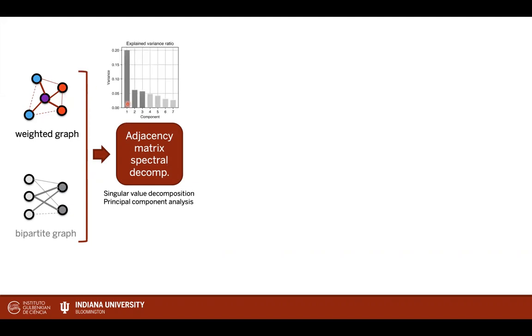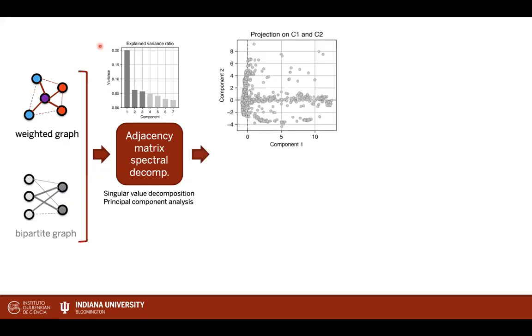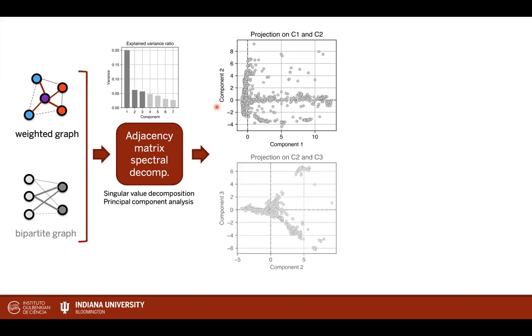This will give us the explained variance for each component, shown in this plot here, that the first component explains about 20% of the overall variance of the network structure. It's very common to plot the projection of these nodes or these variables onto these biplots, where you have component 1 and component 2, but you can also have component 2 and component 3, and so forth.